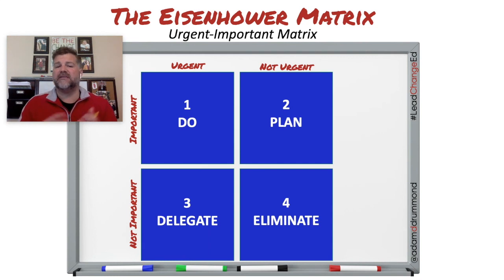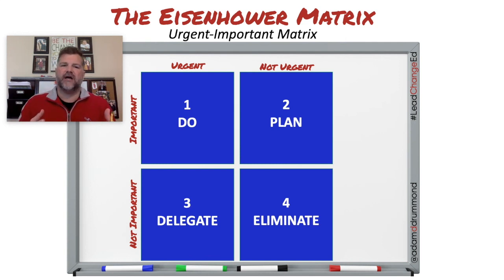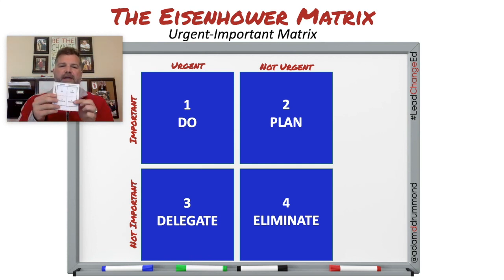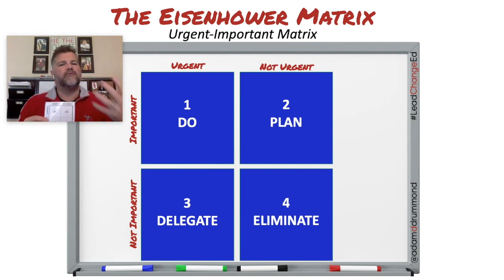If you have the ability, power, and control to eliminate a task, then by all means do so. We want to use a decision-making model that's logical, sequential, and makes sense for us. For me, that's the Eisenhower matrix. I actually have it laminated right here on my desk, and I use it every day to think through things as I'm having calls, Zoom meetings, reading email, and thinking about what I need to accomplish.